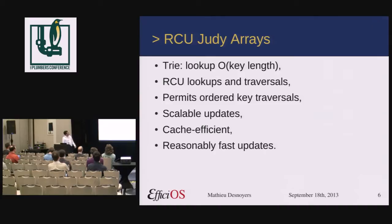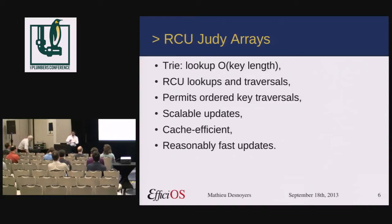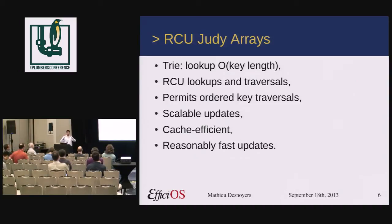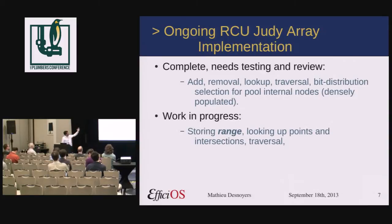My currently ongoing work is on Judy arrays. Judy arrays are a trie, so the lookup basically needs to go through something on the order of the key length. It provides RCU lookups and traversals. Unlike hash tables, Judy arrays really permit ordered traversals. It provides scalable updates, since the locks are basically distributed within the trinodes. It's very cache efficient — I made sure to compress as much as possible the representation of the index that needs to be traversed by lookups. And it provides reasonably fast updates, but most importantly they are scalable. The implementation is complete and needs testing and review. It provides add, removal, lookup, and traversal.